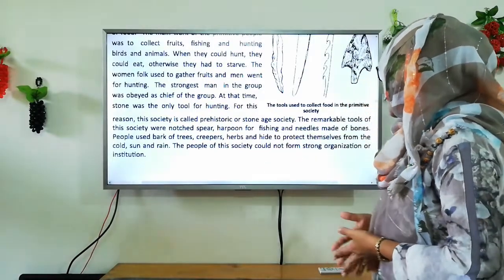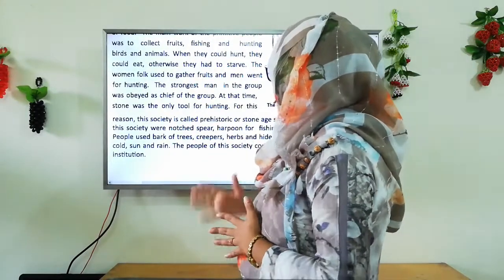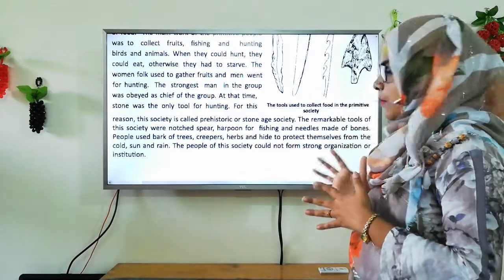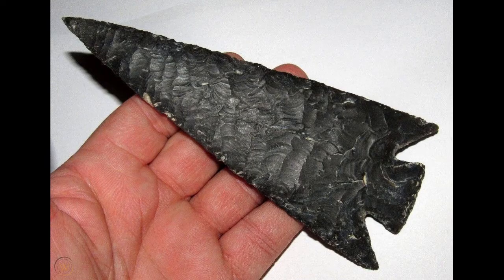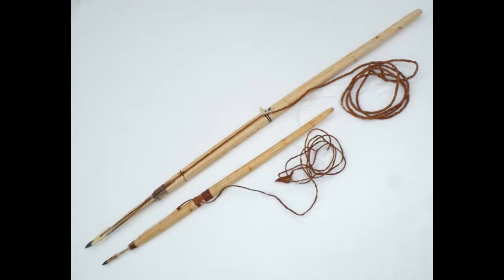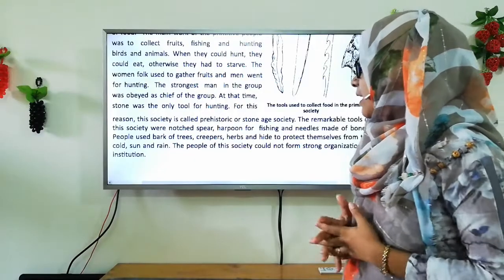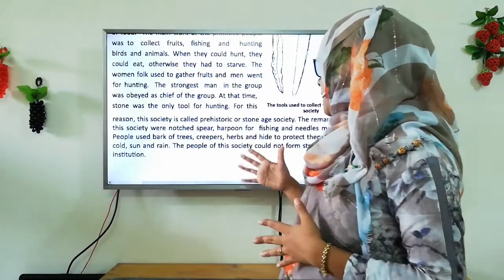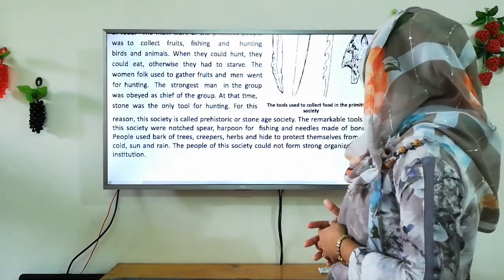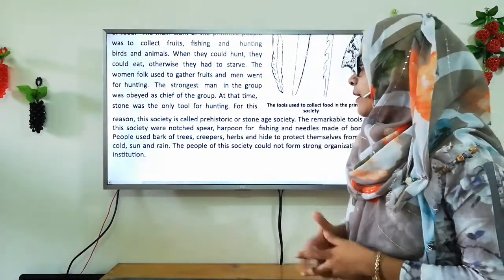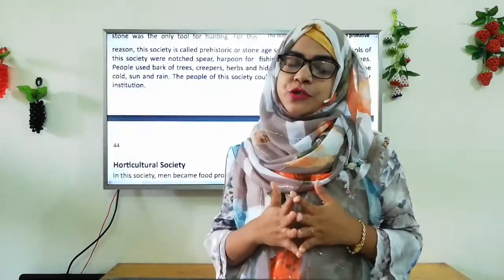The tools used included a harpoon for fishing and needles made of bones. People used creepers, hides to protect themselves from the cold, sun, and rain. The people of this society could not form a strong organization or institution. This is the end of the hunting and food gathering society topic.